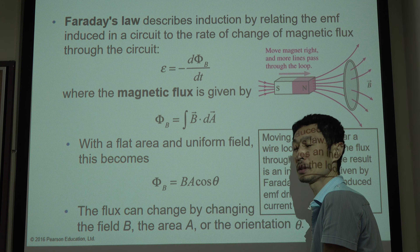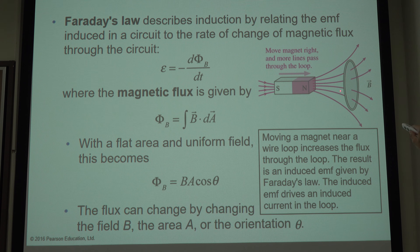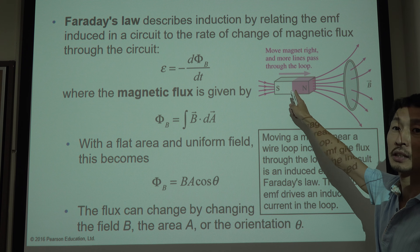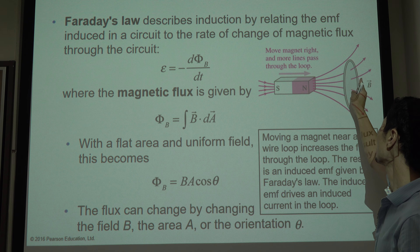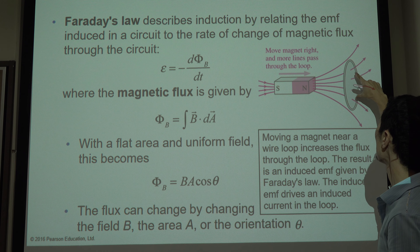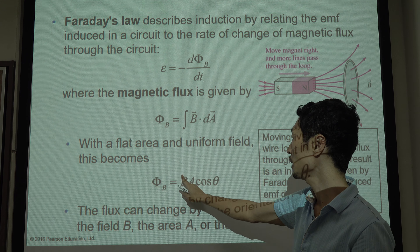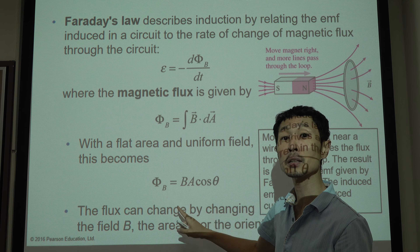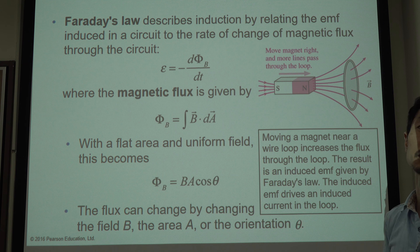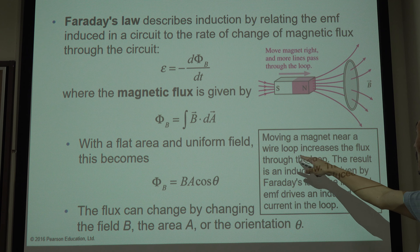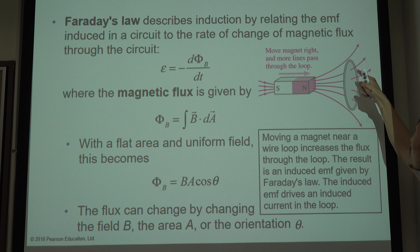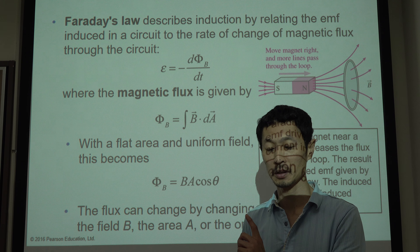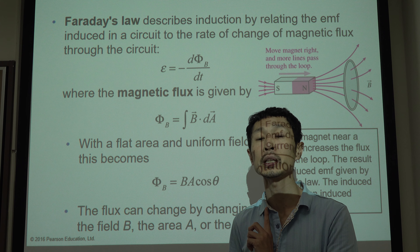For example, if the magnet is moving toward the loop, the magnetic field is going to increase. If you move it closer, the magnetic flux will be denser — the magnetic field will be stronger. So magnetic flux will change and there will be induced current in the circuit. Moving a magnet near a loop increases the flux through the loop. The result is an induced voltage given by Faraday's law, which drives an induced current in the loop. This is one of the most fundamental laws in electromagnetism.